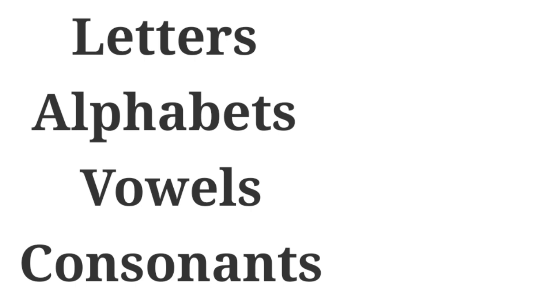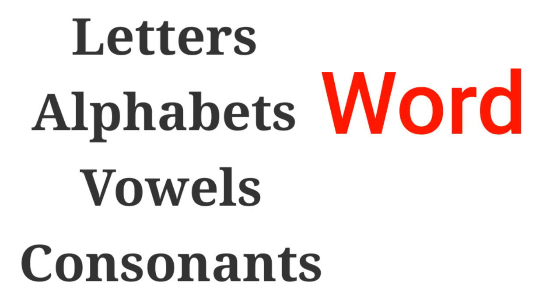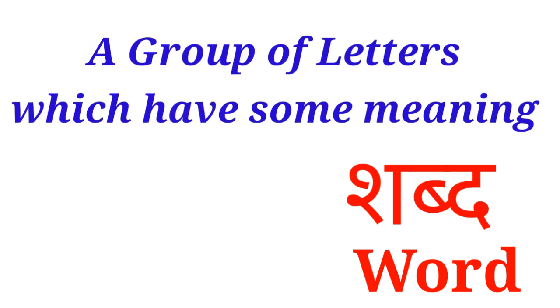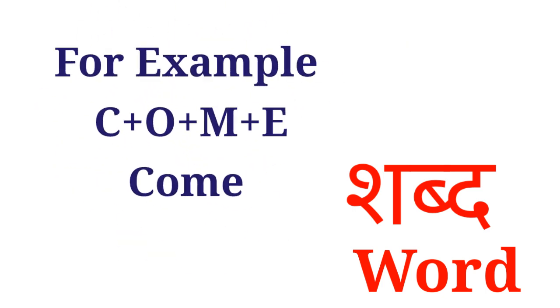Ab humne padh liya what is letter, what is alphabet, what is vowel, what is consonant. Ab in ko jod ke humare paas kya banega? Word. Jo Hindi mein hum bolte hain shabd. Do ya do se adhik varnon se bane aise samooh ko shabd kehte hain jiska koi arth hota hai. A group of letters which have some meaning is called word. For example, come: C-O-M-E.